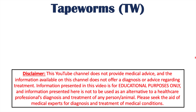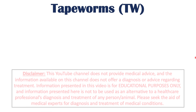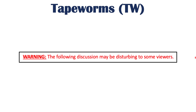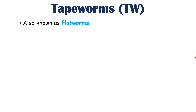Hi everyone. In this lesson we are talking about the signs and symptoms, nutrient deficiencies, and complications that can occur from a tapeworm infection. Before we get into the signs and symptoms, let's talk about what tapeworms are. Tapeworms are also known as flatworms, and the reason they are called flatworms is because they are flat in appearance — they can actually look like a piece of tape or a measuring tape.